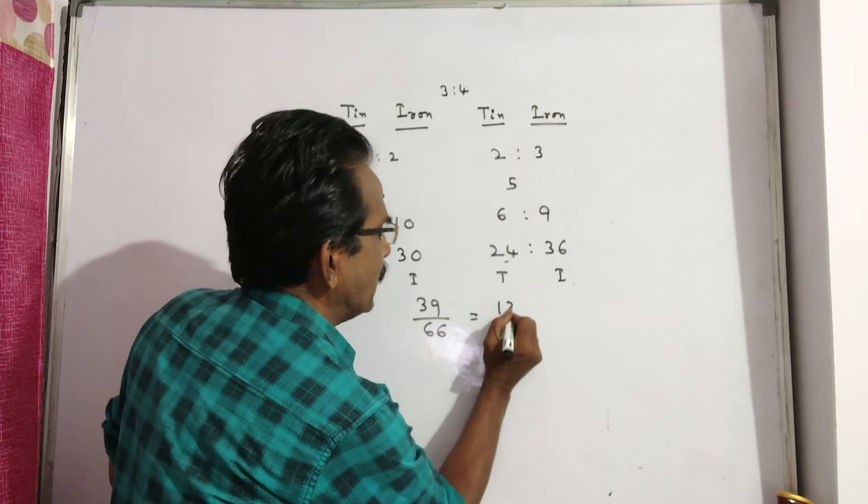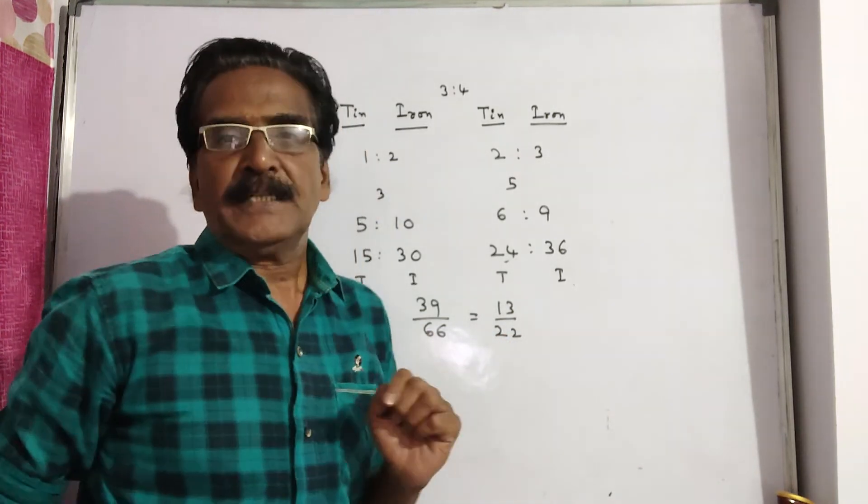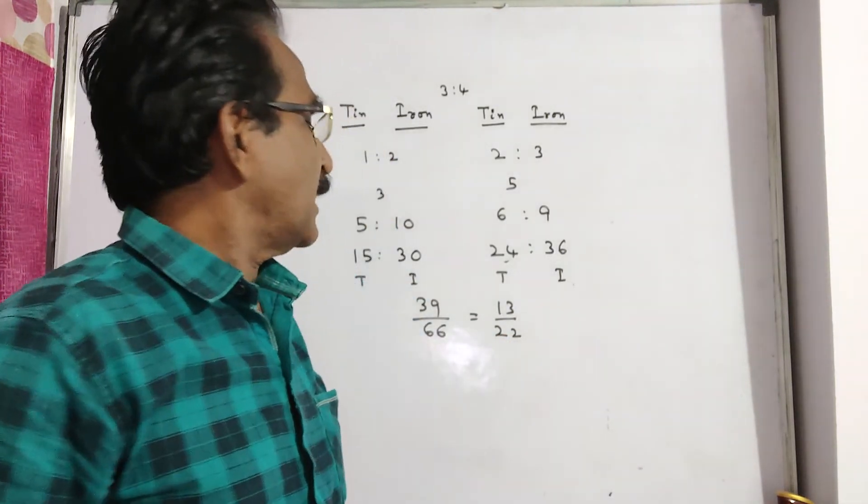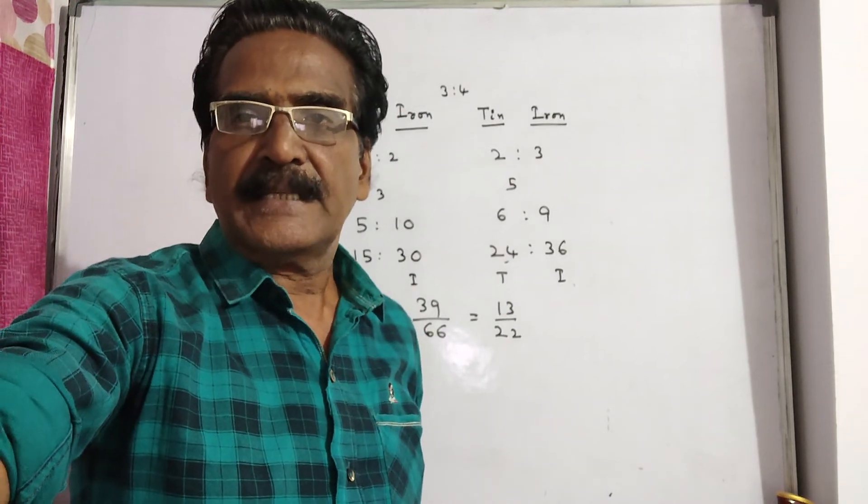This comes to 3 times 13, 3 times 22. So tin and iron are in the ratio 13 is to 22. Friends, thank you.